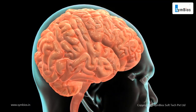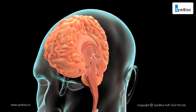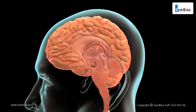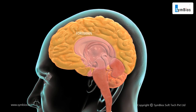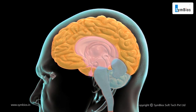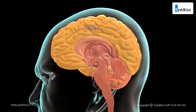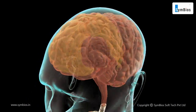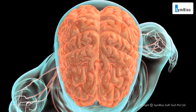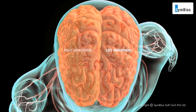The brain is a concentration of nerve tissues. This complex organ can be broken down into three main sections: the forebrain, the midbrain, and the hindbrain. The largest part of the human brain is the cerebrum, and is divided into two parts: the left hemisphere and the right hemisphere.